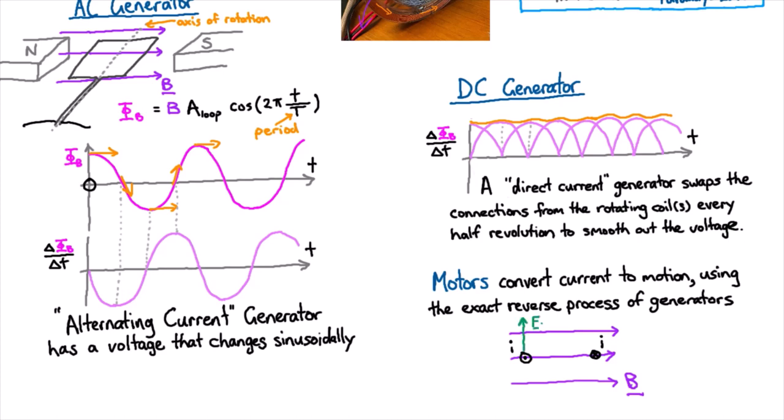And on the other one we're going to have our fingers pointing in and then we're going to swing them around to the magnetic field. And so our thumb is pointing down and so that will be the direction of the force.